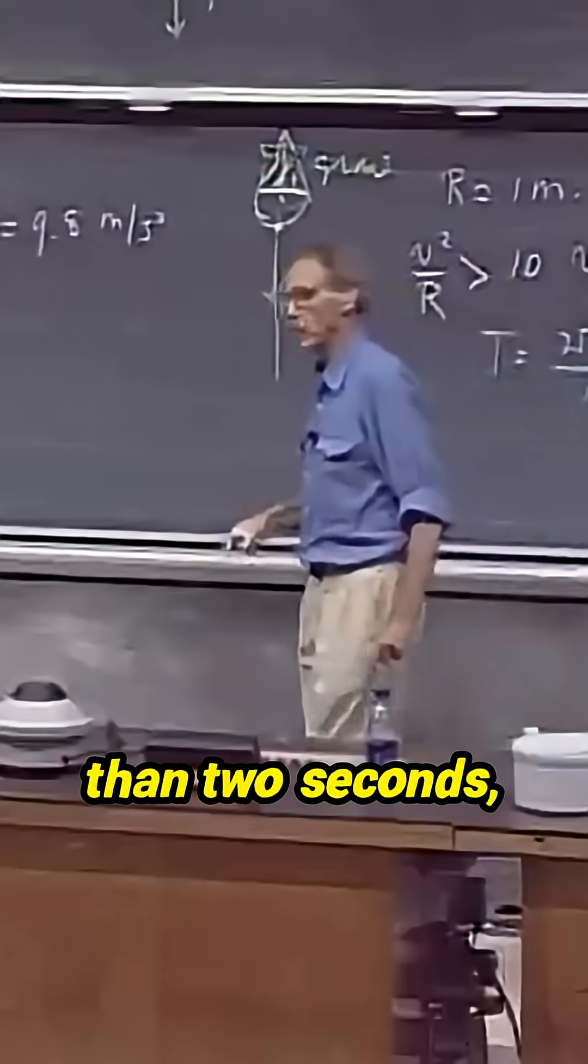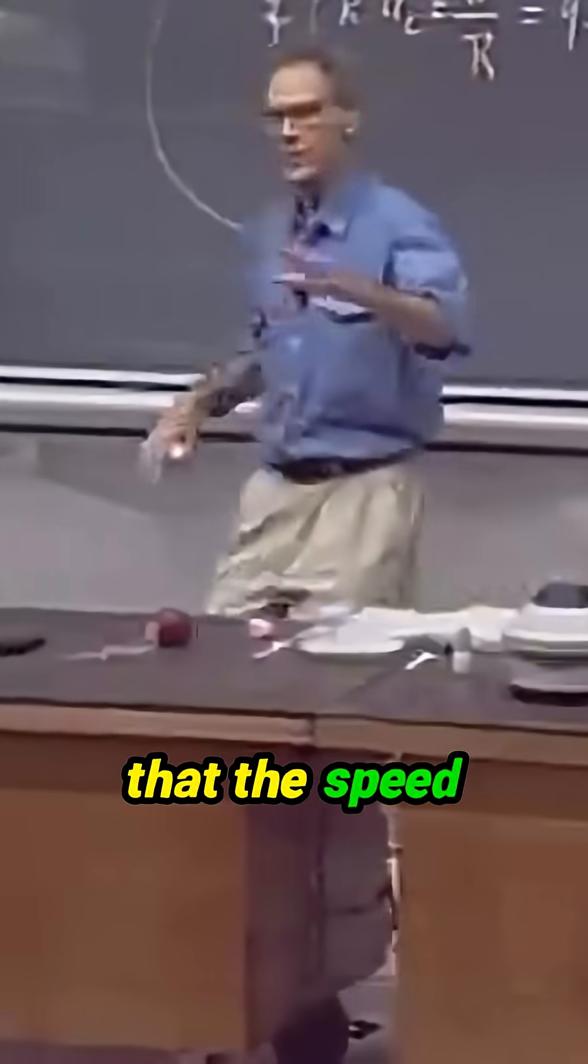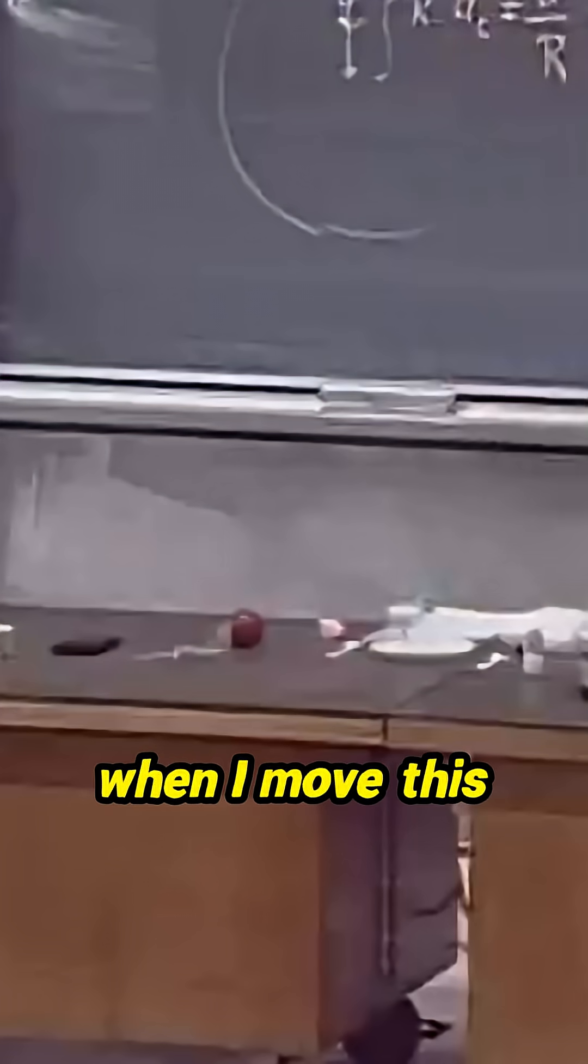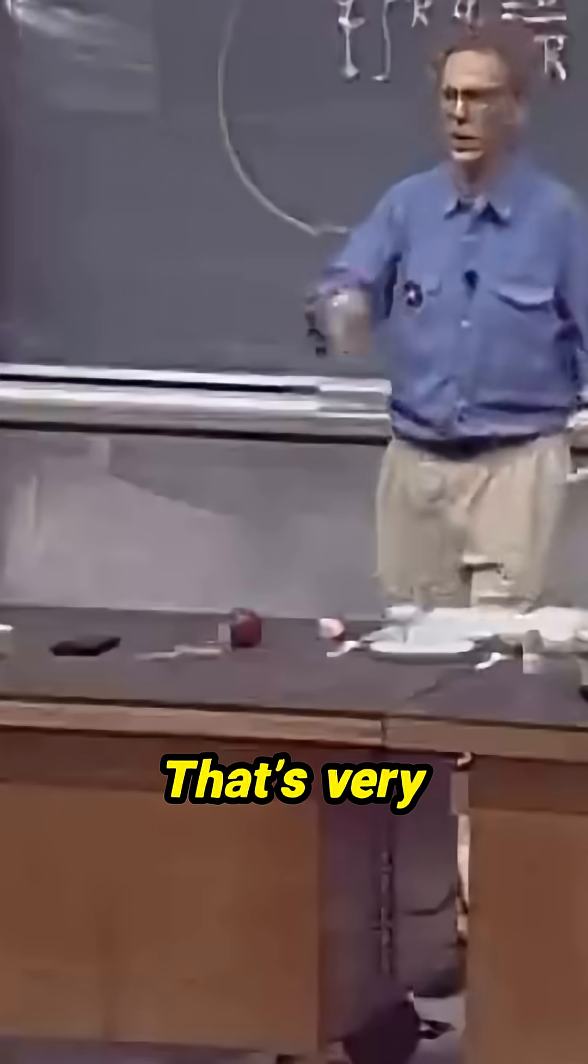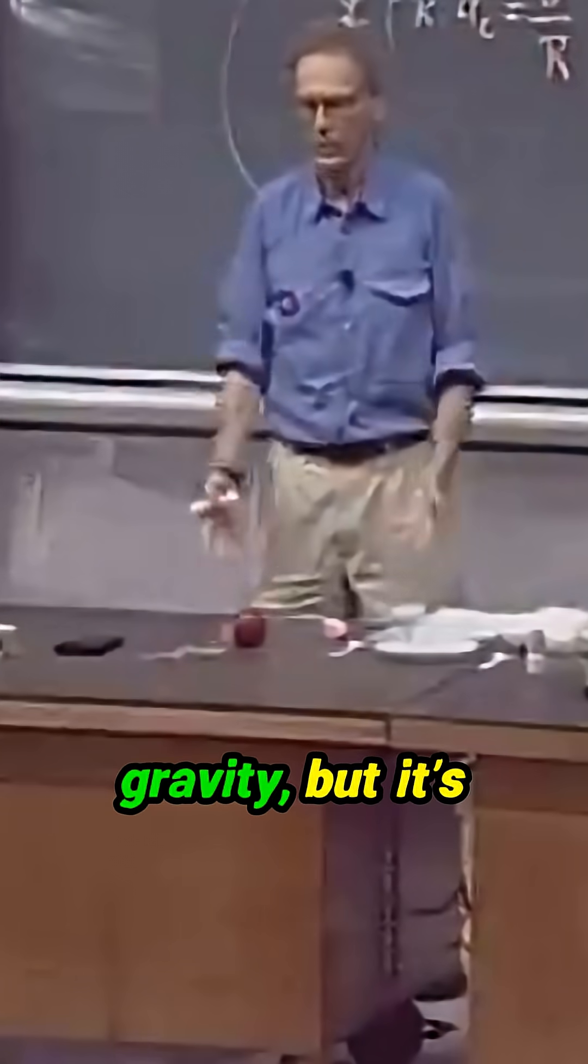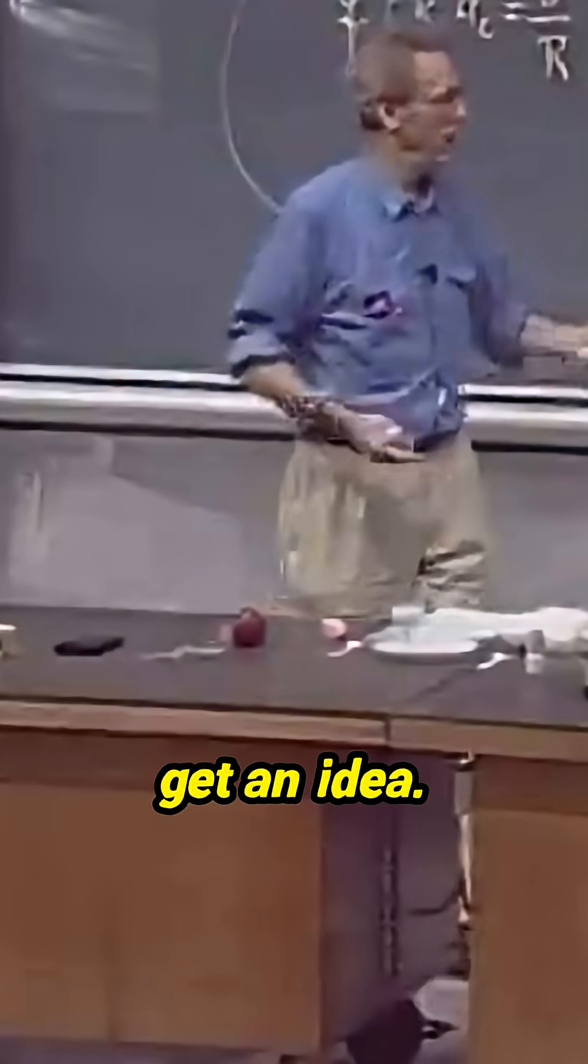So if I swing this around in less than two seconds, I would be okay. Now, I realize that the speed when I move this thing around is not constant everywhere. That's very difficult to do that because of gravity. But it's close enough to get an idea.